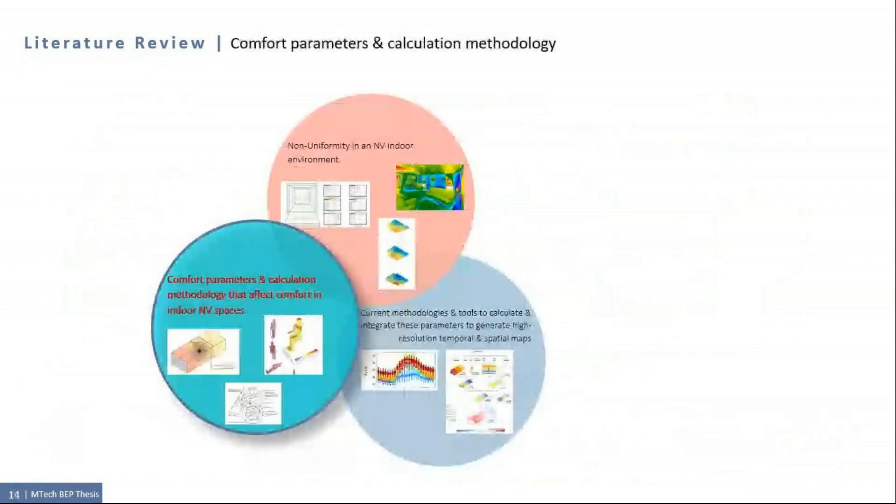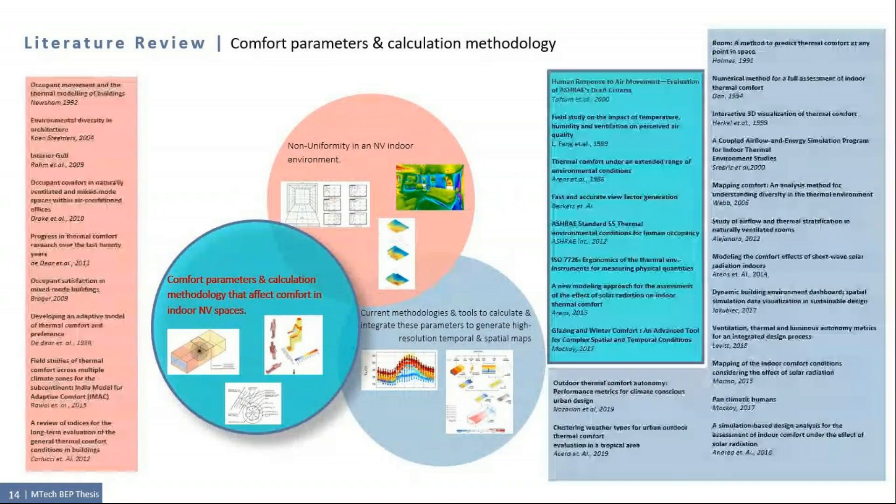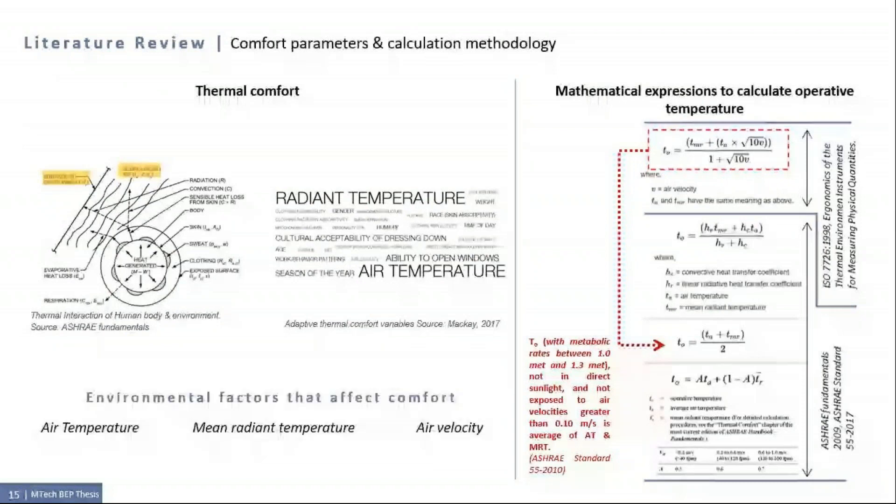The third part of the literature review was to understand the comfort parameters and derive methodologies to generate operative temperature plots. Thermal comfort is defined as condition of mind that expresses satisfaction with the thermal environment. The definition is easy to understand but it is hard to express by mathematical relation because it is required to consider number of environmental and personal parameters like culture, behavior, weight, grade, sex. But the basic environmental parameters like air temperature, mean radiant temperature and air velocity define the environmental thermal state and can be expressed in mathematical expression.